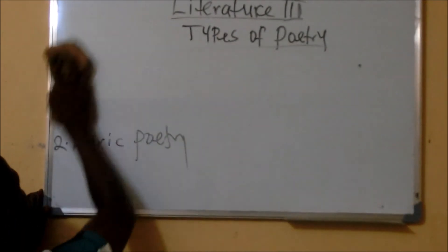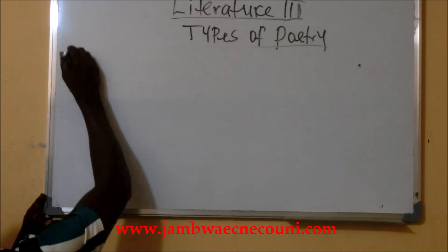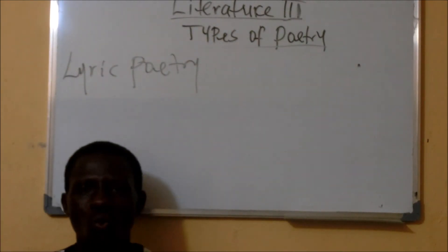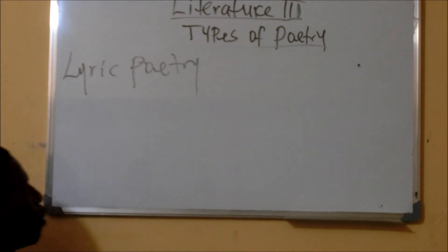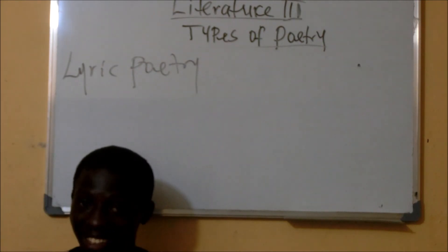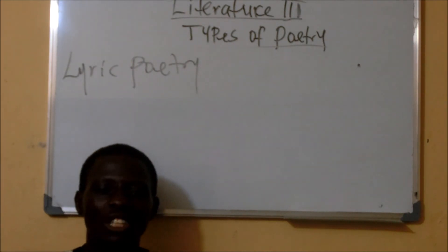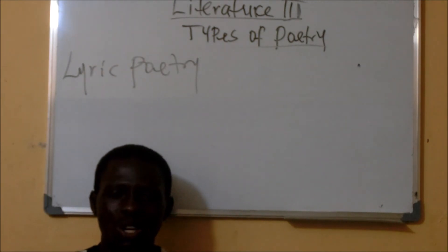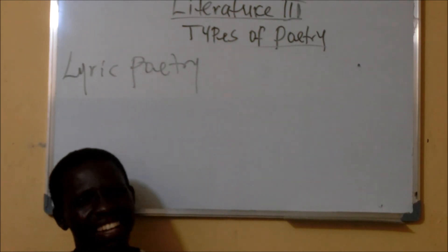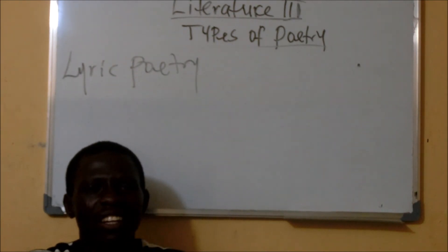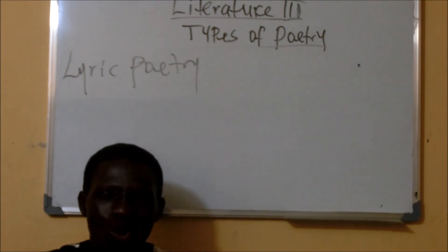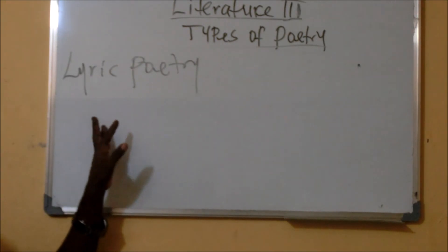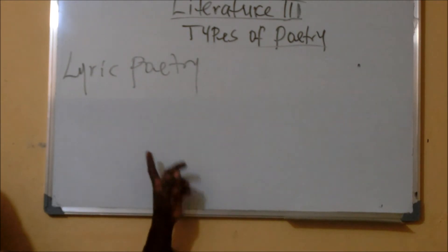Now let us look at lyric poetry. Lyric poetry has to do with lyrics. The word lyric is from a Latin word which simply means instrument or musical instrument. Lyric is a type of poem that has to do with the emotion, feelings, and mood of the poet, and they have a reflection on the reader. We also have types of poems under lyric poetry.